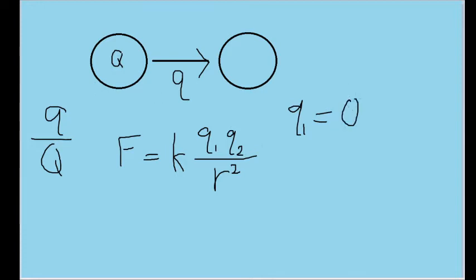So I'll write q sub 1 as big Q minus small q, and the other charge is just small q, since that's the charge that the second particle gains.